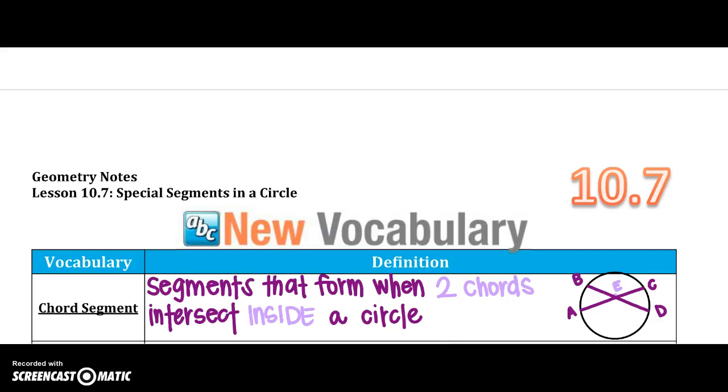Welcome back to chapter 10. We are here with section 7. You have learned the segments of a circle, so chords, diameters, radii, tangents, secants. So now we are going to put those into play, and we're going to find special segments in a circle. So we're going to solve for those segments.